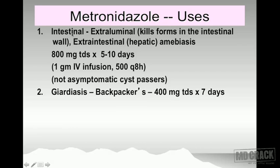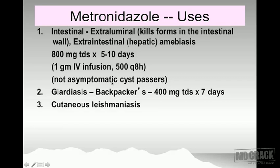For intestinal and extra-intestinal amoebiasis, the dose is 800 milligrams three times a day for five to ten days. If required by intravenous infusion: one gram IV infusion initially, then 500 milligrams every eight hours. Please remember it is not useful against asymptomatic cyst passers.